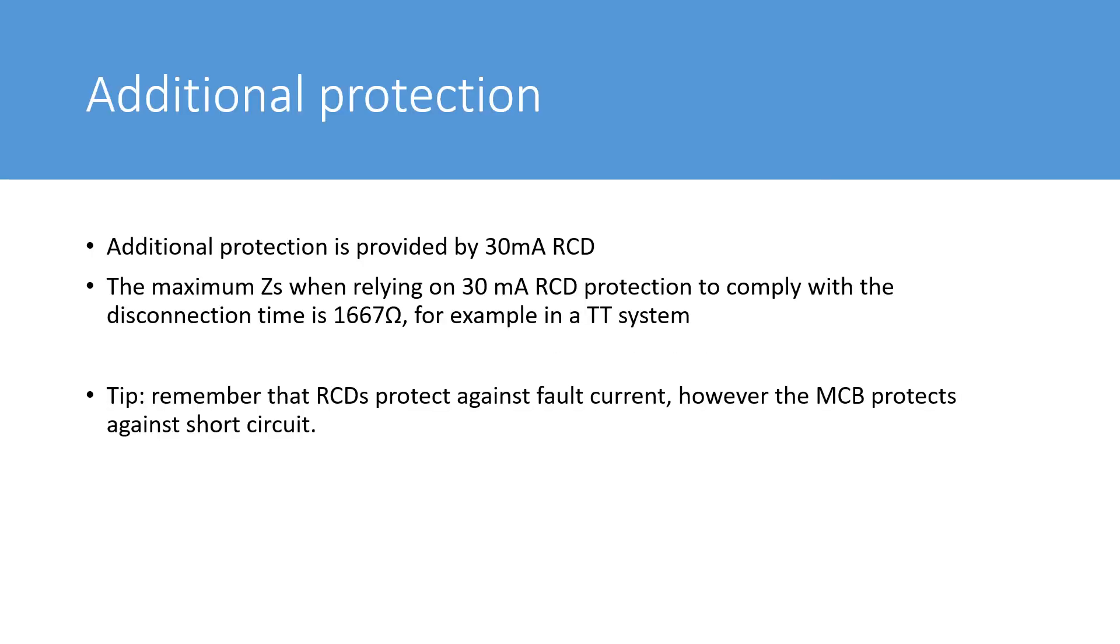So additional protection is provided by 30 milliamp RCD. The maximum ZS when relying on a 30 milliamp RCD to comply with the disconnection time is 1667 ohms for example in a TT system. And this is given in table 41.5 of BS7671. Now it's important to remember that RCDs protect against fault current, however it's the MCB or overcurrent protector device that protects against short circuit current.